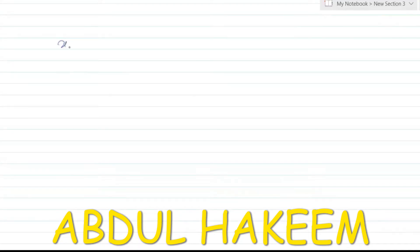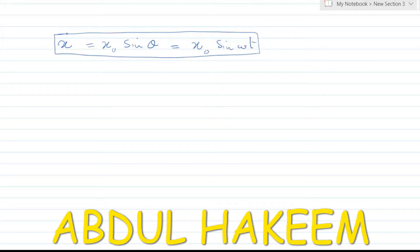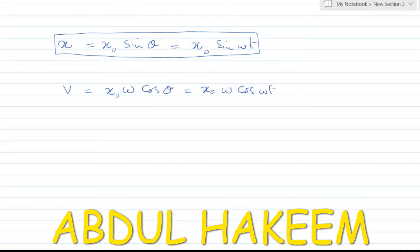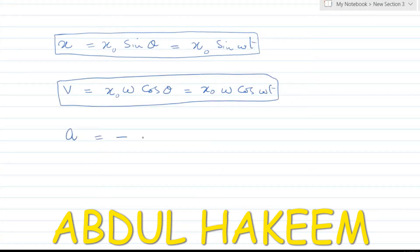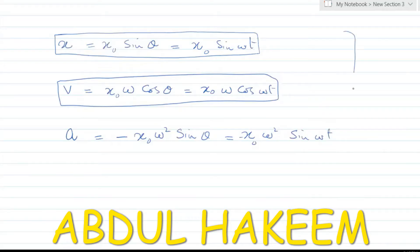So last we have derived that x is equal to x-naught sine theta, which is also x-naught sine omega-t — this is the equation between displacement and time. Next, velocity is equal to x-naught omega cosine theta, or v equals x-naught omega cosine omega-t — the relation between velocity and time. Next, acceleration equals minus x-naught omega-squared sine theta, which can be written as minus x-naught omega-squared sine omega-t. These are the important equations for simple harmonic motion.